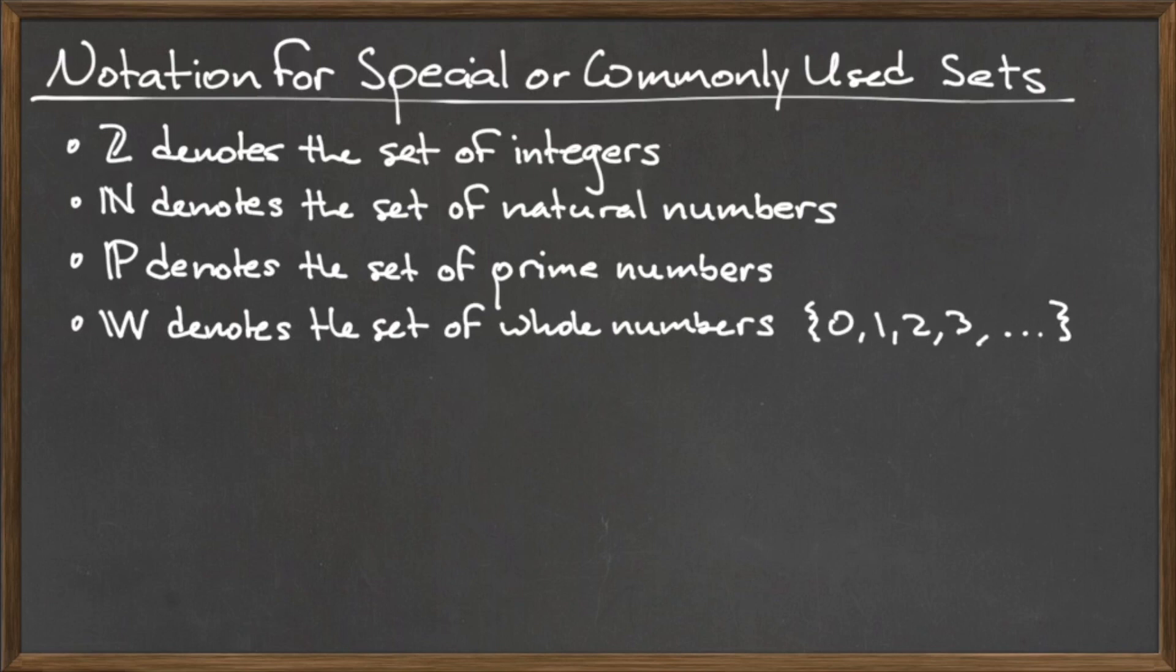The final three sets will be discussed extensively in later videos, but it is important to introduce them now. For some natural number N, we define the set Zn as the set containing 0, 1, 2, and all of the positive integers up to N-1.